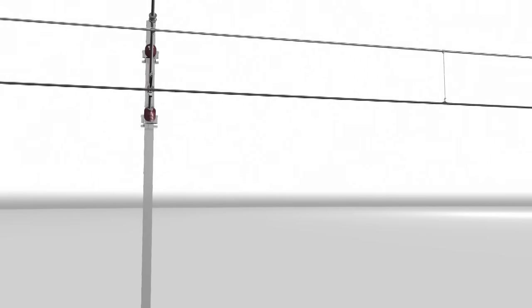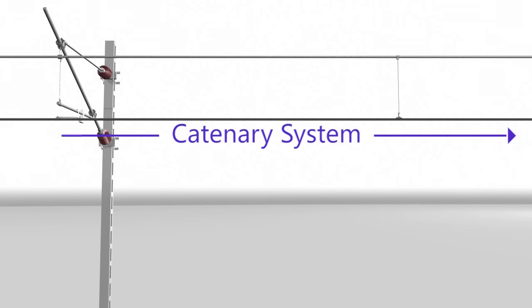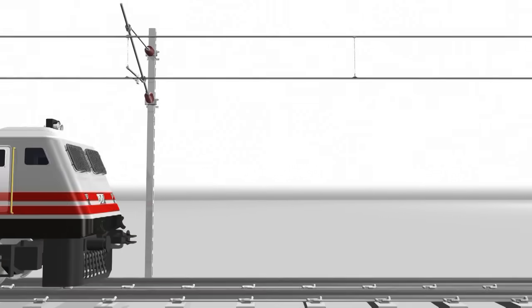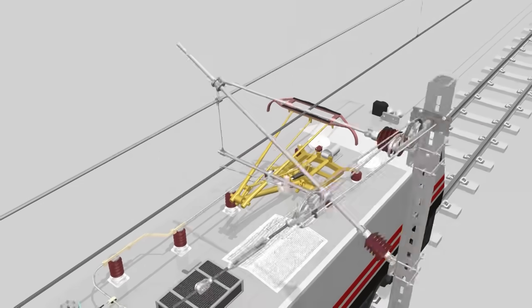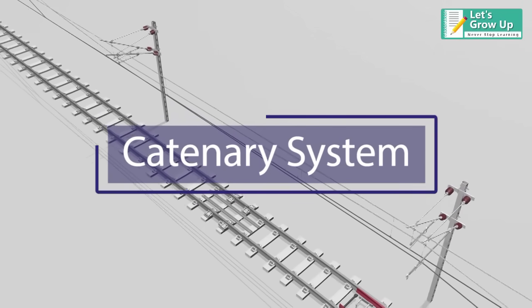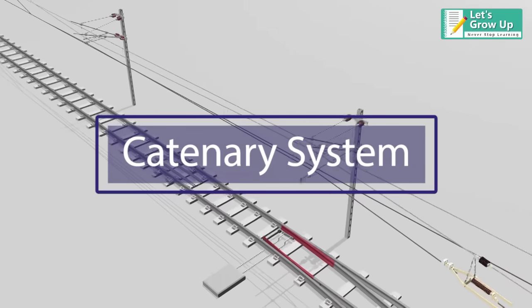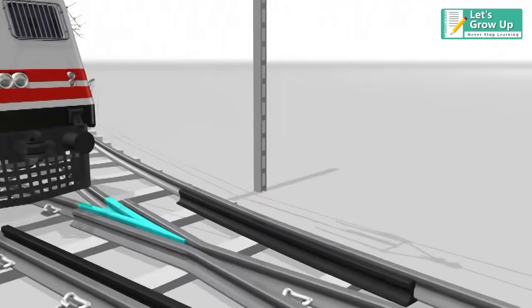The railway overhead wire is called a catenary system. It is used to supply electricity to a locomotive which is equipped with a pantograph. In this video we will learn about the catenary system and its structure. Electric trains are powered by electricity carried through overhead lines or a conductor rail.